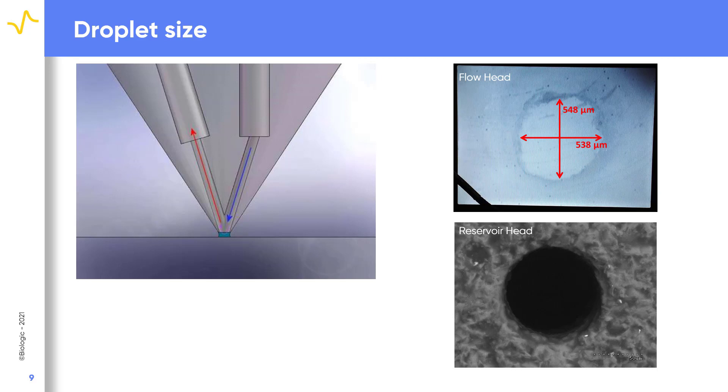Because the droplet defines the size of the working electrode, it also defines the resolution of the SDC experiment. So what controls the size of the droplet? The head itself is important in determining the size of the droplet which forms.